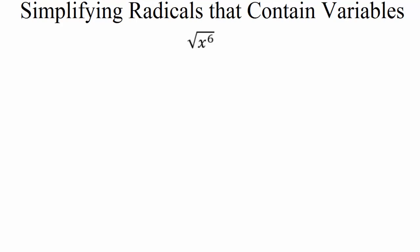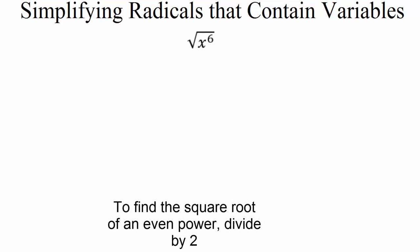This video is going to cover simplifying radicals, specifically with examples that have variables. There are two rules we need to remember when simplifying radicals with variables: one for when we have an even power, and the other for when it is odd. Let's start with the even power, since that's the example we're looking at here.